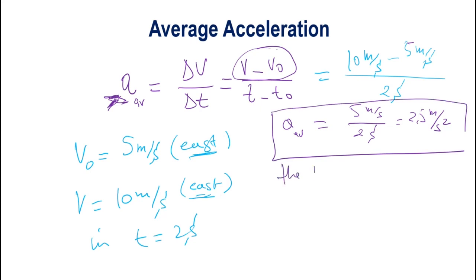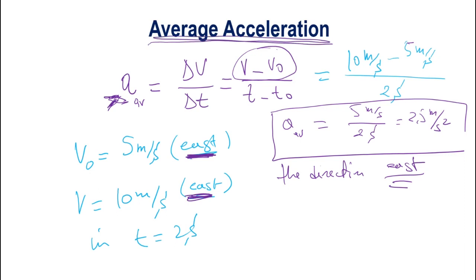The acceleration is a vector because it depends on velocity, which itself has magnitude and direction. Therefore, acceleration must also have magnitude and direction. Anything going east is positive; anything going west is negative. Always pay attention to the details of the initial and final velocities when solving for acceleration.